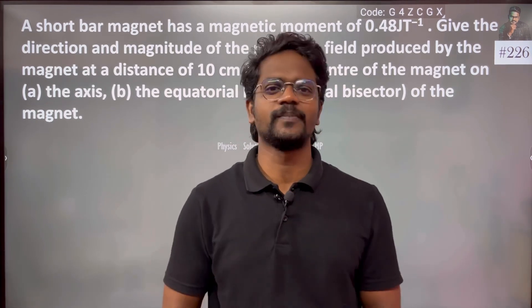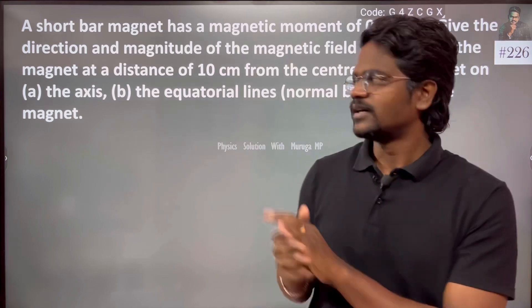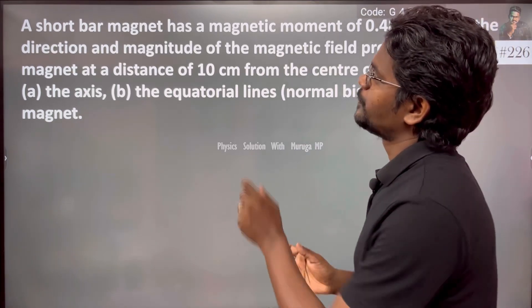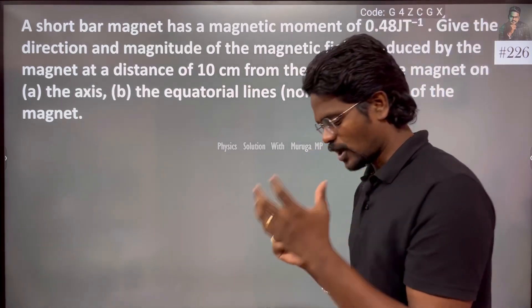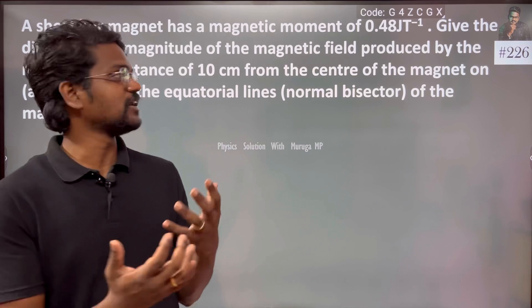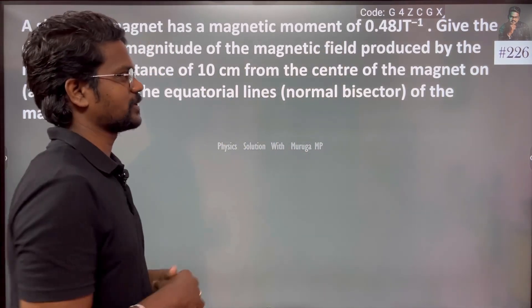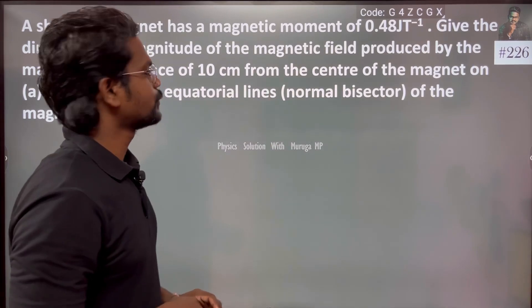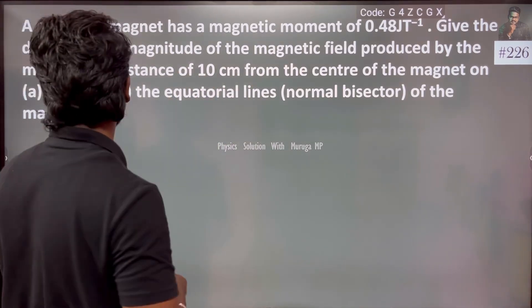Hi everyone, I have a very important problem. We are in the 5th chapter, 2nd question. A short bar magnet has a magnetic moment of 0.48 J/T. Give the direction and the magnitude of the magnetic field produced by the magnet at a distance of 10 cm from the center of the magnet.